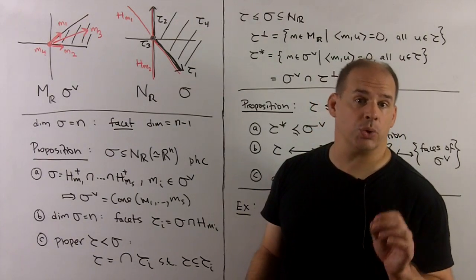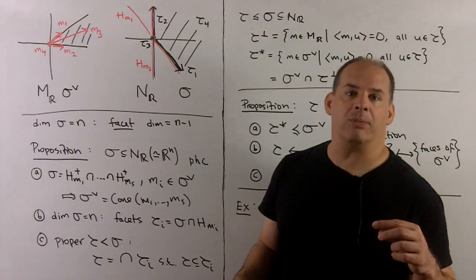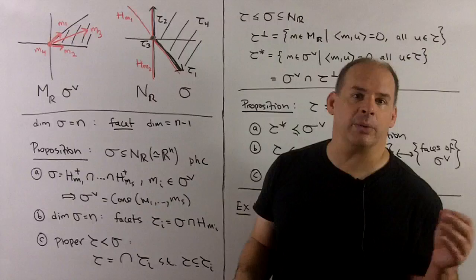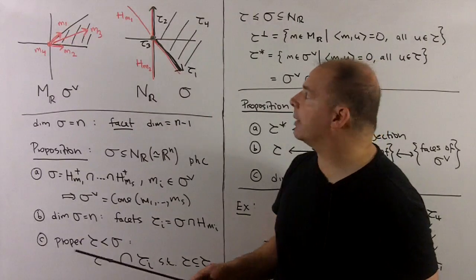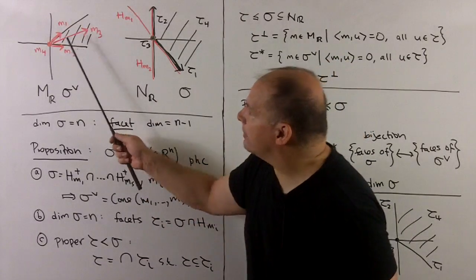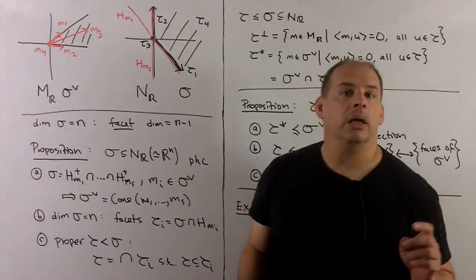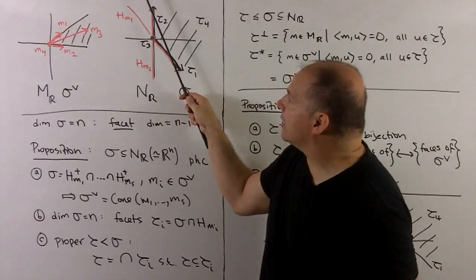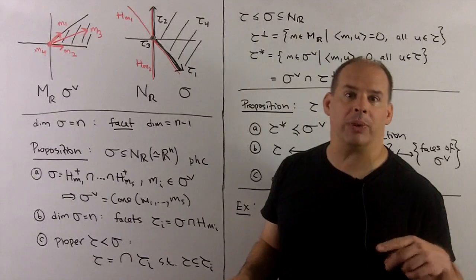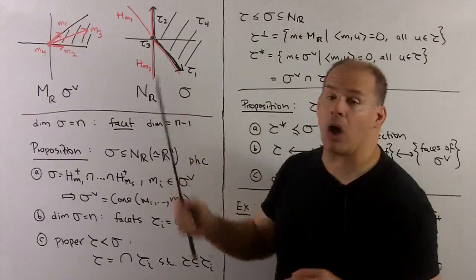Let's run our recipe for faces through the usual example with sigma and sigma-check. We pick m_1 through m_4 in sigma-check, where m_4 is the origin. The recipe says we take the perpendicular and intersect with sigma. For m_1, the perp intersect sigma gives tau_1. For m_2, we get tau_2 pointing out. For m_3, we get just the origin as a face. And for m_4, the perp gives everything, intersected with sigma gives all of sigma back. So that recipe catches all of our faces.